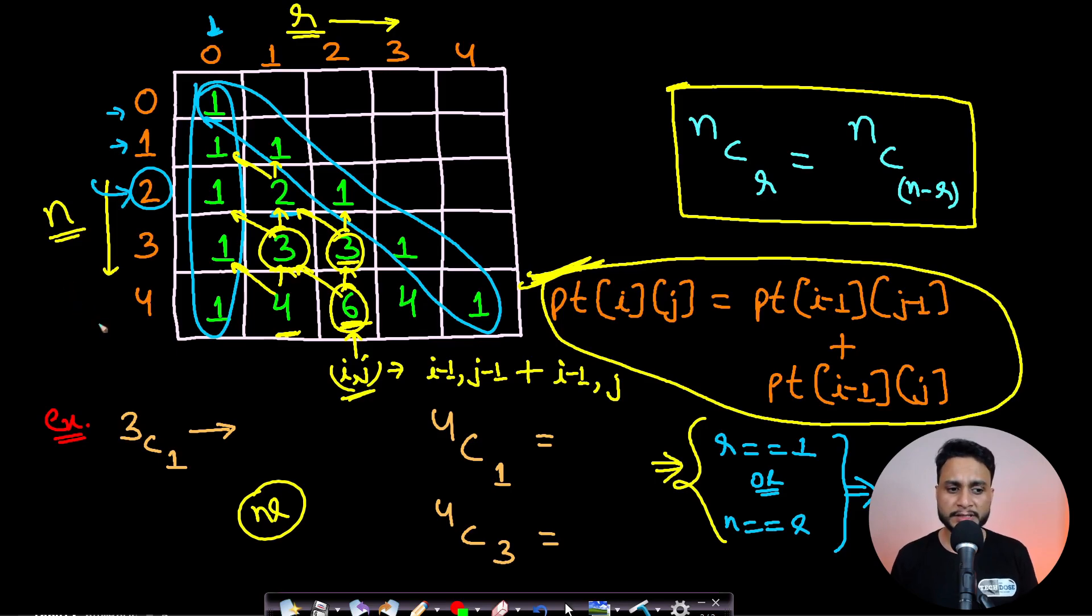Having formed this Pascal's triangle, it is very easy to answer what will be the nCr value, which is the binomial coefficient. If I want to find 3C1, where n is 3 and r is 1, you go to row number 3 and column number 1, which shows value 3. If you want to find 4C1, go to row 4, column 1, and you will see 4 is present.